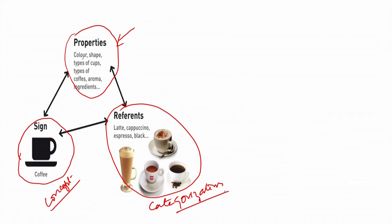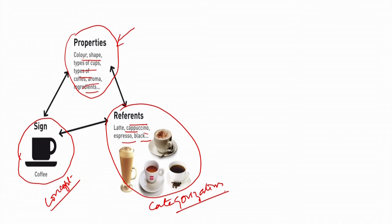So, this is coffee. The properties of coffee are its shape, type, color, aroma, ingredients and so on. In terms of categorization, the references are latte, cappuccino, espresso, black coffee, iced coffee, Irish coffee, or some other form of coffee. Basically, this is the concept and these are the properties. Most of these types of coffee have these properties - and so this is the process of categorization.